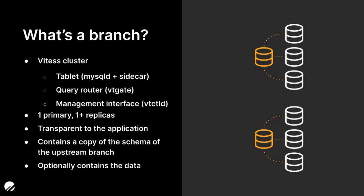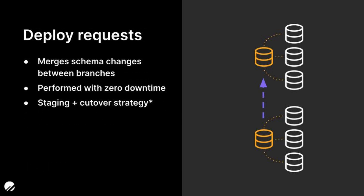Optionally, with the data branching feature, you can also copy data from an existing backup of your production database into the new development branch. Deploy requests in PlanetScale are very similar to pull requests in a development environment — they allow you to merge schema changes from one branch to another, provided the upstream branch has safe migrations enabled. Safe migrations allows deploy requests to happen with zero downtime using a staging and cutover strategy: a copy of the table is created with the new schema, data is replicated over, and then the statuses of the tables are flipped so the staging table becomes the production table.